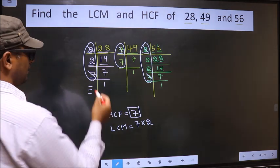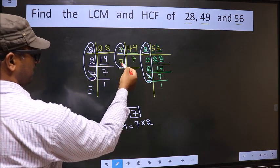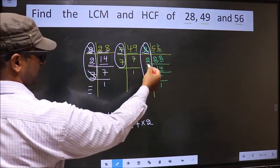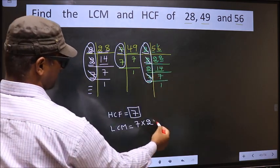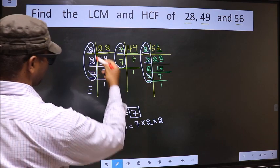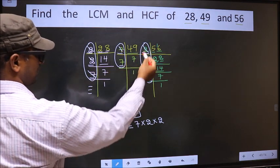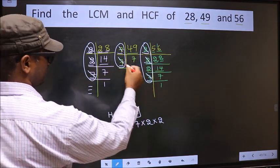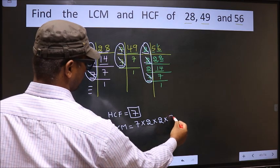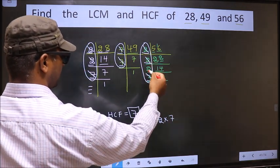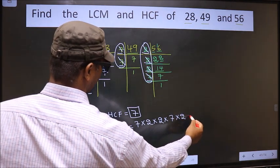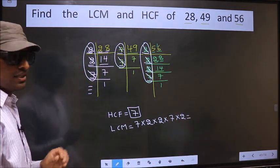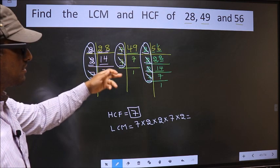Next, here we have 2. Do we have 2 here? No. Do we have 2 here? Yes. So you cut 2 and write here. Now here 7, do we have 7 here? No. So you cut 7 and write here. Here 2 is not cut, so you cut 2 and write here. Now each number has been cut.